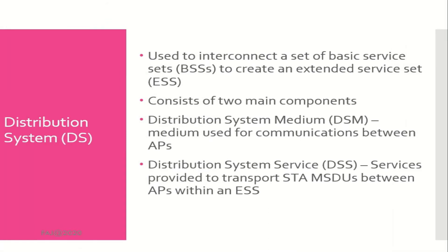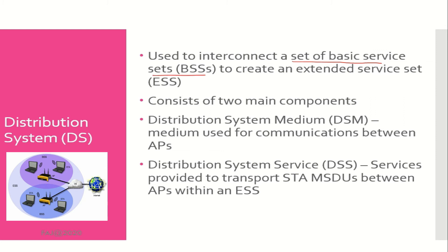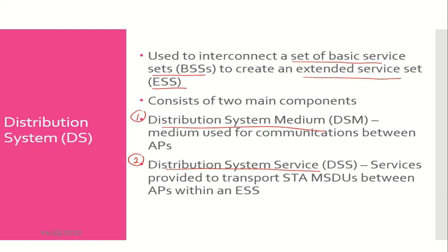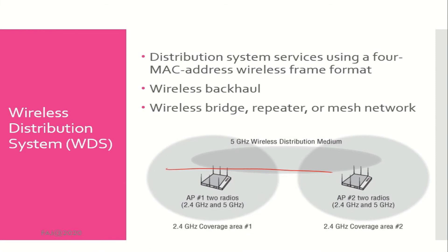Distribution system: used to interconnect a set of basic service sets (BSS) to create an extended service set (ESS). It consists of two main components: distribution system medium and distribution system service. Wireless distribution system (WDS) uses a 4-MAC-address wireless frame format. WDS can connect access points together using what is referred to as a wireless backhaul. A wireless repeater is another example of the 802.11 WDS, used to extend wireless LAN coverage to areas where it is not possible to provide 802.3 Ethernet cabling.